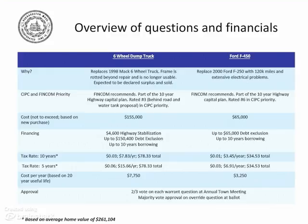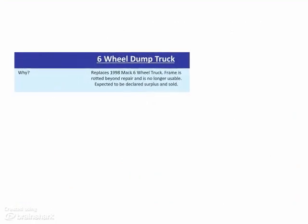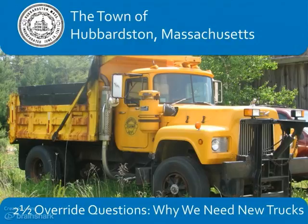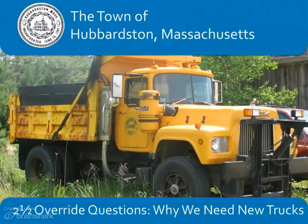Let's create a title slide that outlines the goal and the reasoning behind it. We're going to focus on the six-wheel dump truck and create a new title slide based on just this information. Here's the new title slide, and we've included a picture of the truck that the town wants to replace. It's easy now to see how rusty and unused the truck is. The title, 'Two and a Half Override Questions: Why We Need New Trucks,' is the main message of the presentation. Since this is the title slide, it's displayed as the audience files into the room, giving them time to absorb the information.